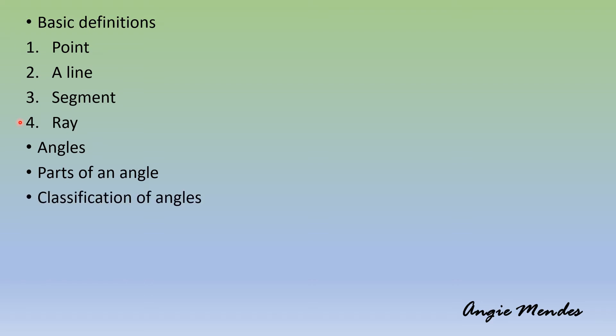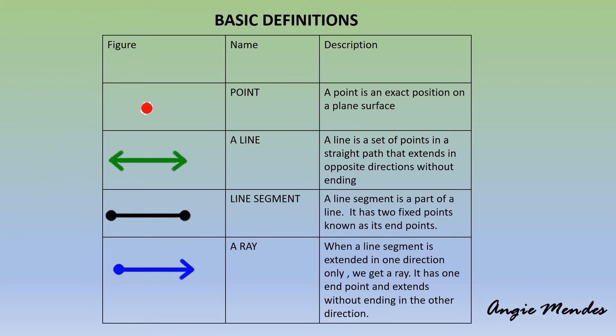Let's begin by discussing what is a point. A point is an exact position on a plane surface. When you make a fine dot on the paper using a sharp pencil, a point is made. A point has no length, breadth, or thickness.